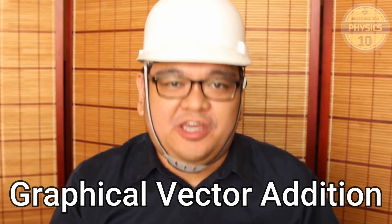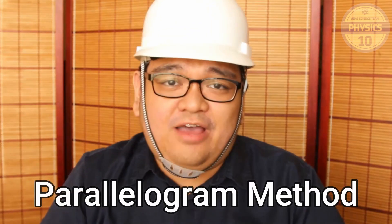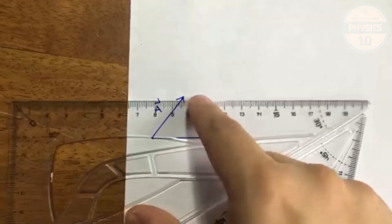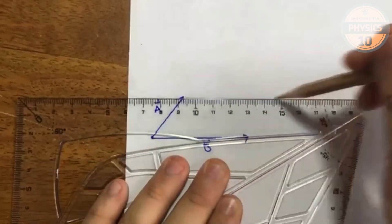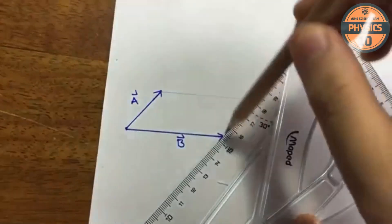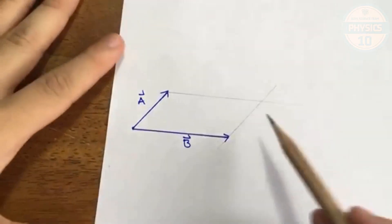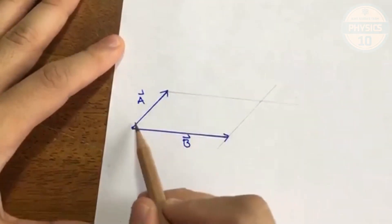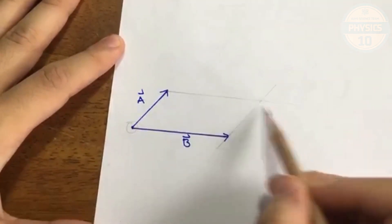And they can be added by something called graphical vector addition. The first method is called the parallelogram method. As I will now demonstrate, the idea here is that you have two vectors that come from an origin point. All you have to do is complete the parallelogram by drawing two parallel lines to these two original vectors. Once you draw the parallel lines, you will have an intersection point. And all you have to do is to connect the origin point to this intersection point. And you have your resultant vector.